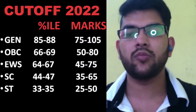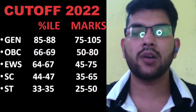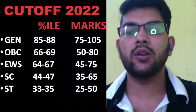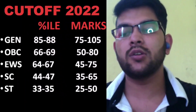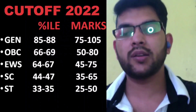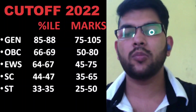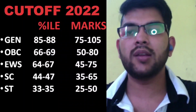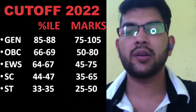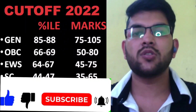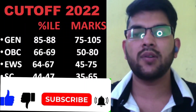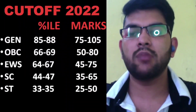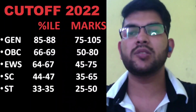For ST candidates, 33 to 35 percentile will be the cutoff and you need to score 25 to 50 marks. For SC and ST candidates, if you are not able to clear the cutoff, that doesn't mean you won't get a college — you will get a college, but not an IIT. You can get a lower NIT, Triple IT, or GFTI college through JOSAA counseling and CSAB counseling. This is all about the marks versus percentile and cutoff for JEE Advanced 2022. Please subscribe this channel to get all updates about JEE Mains, JEE Advanced, and other entrance exams and counseling. Very soon I will provide the percentile versus category rank video. Thanks.